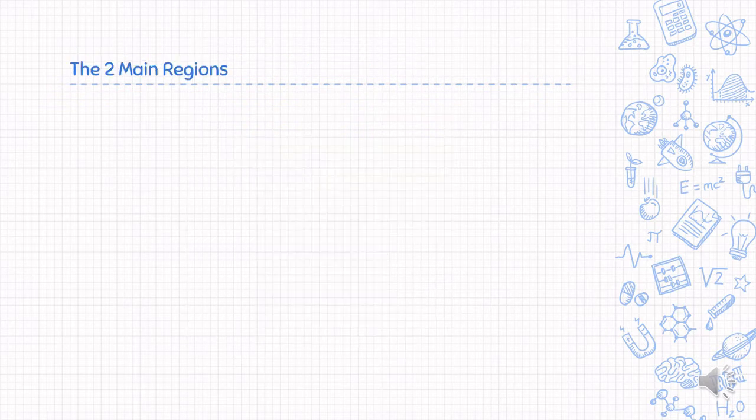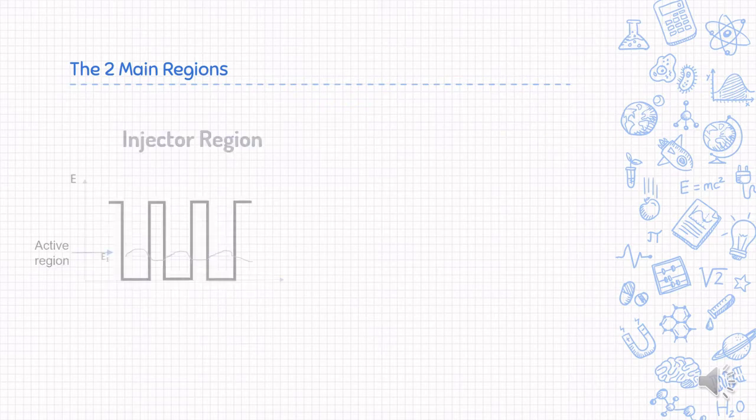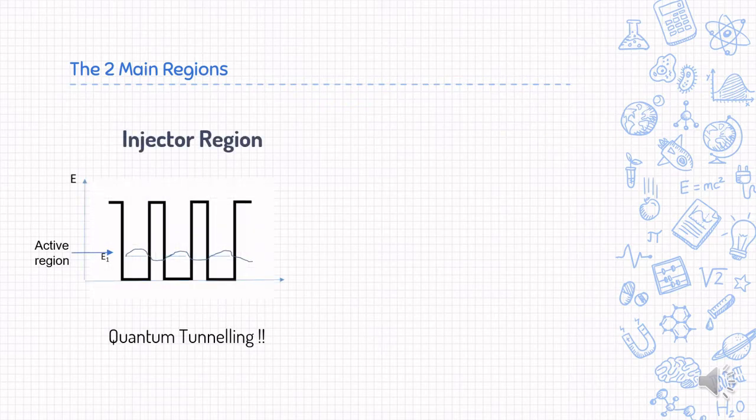Let us take a look at the injector region. It has multiple similar quantum wells connecting alongside one another. Its main role is to receive electrons from one active site and allows the electron to tunnel throughout the whole region to another active site.